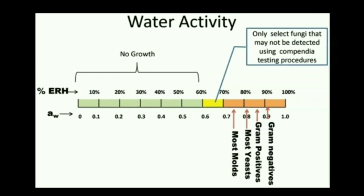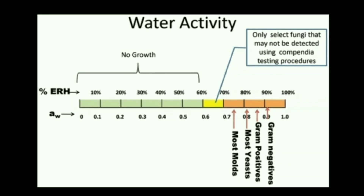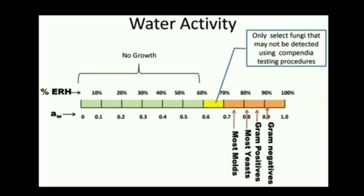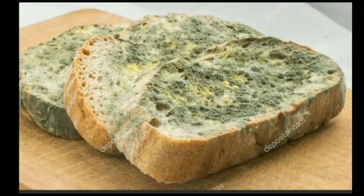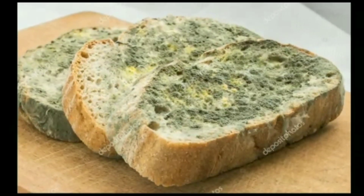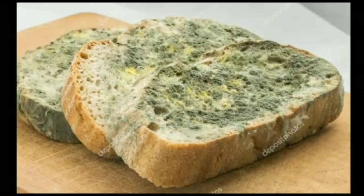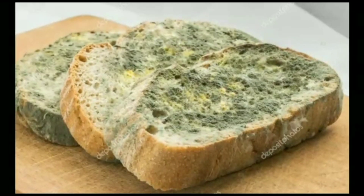Most molds and yeasts can grow at a minimum water activity of 0.8, which can be witnessed in dry food items such as bread. Thus, dry food items are most likely to be spoiled by molds and not by bacteria.